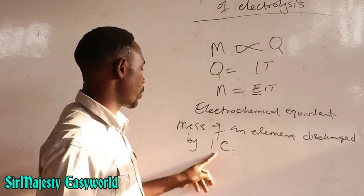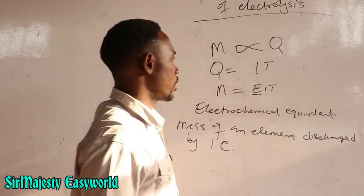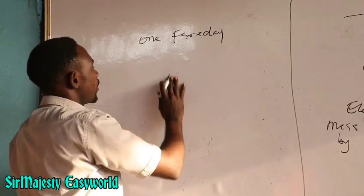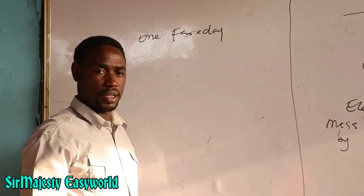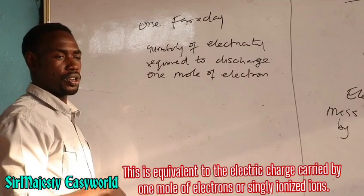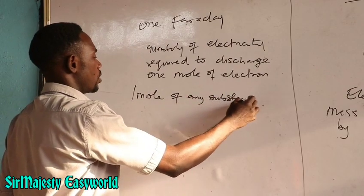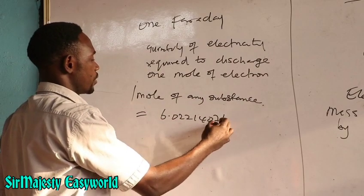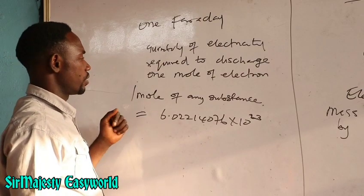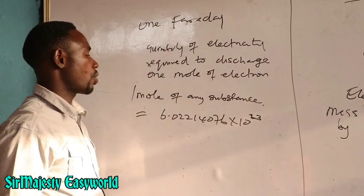To find the electrochemical equivalent of elements, we first have to consider 1 Faraday. One Faraday is defined as the minimum quantity of electricity required to discharge 1 mole of electrons. To derive the value of Faraday, we start from the fact that 1 mole of any substance, according to Avogadro, contains 6.02214076 × 10²³ repeating units. So we are looking at the charge required to discharge 6.02214076 × 10²³ electrons — that is 1 Faraday.